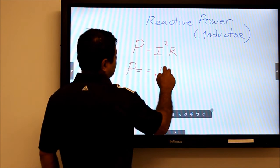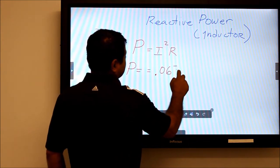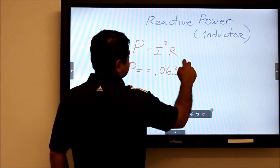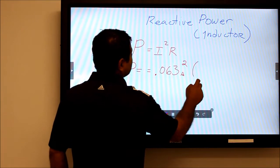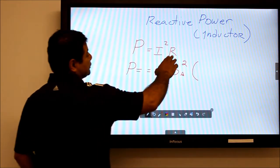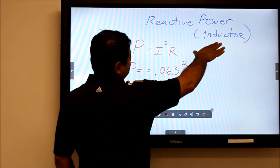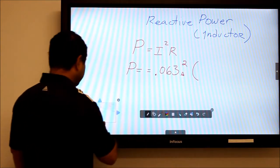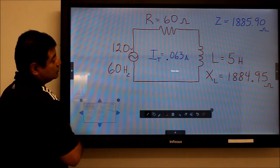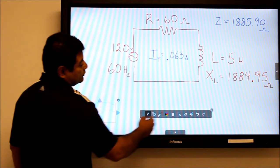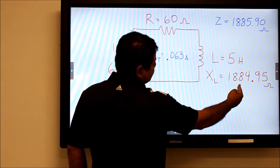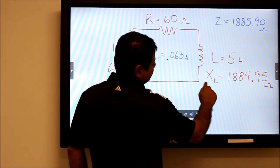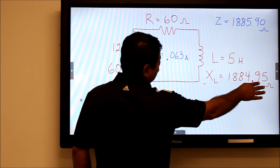0.063 amps squared, and you're going to multiply it by the resistance of the inductor. But remember, the resistance of the inductor has a special name—it's the inductance reactance. It's this value right here: 1884.95 ohms.